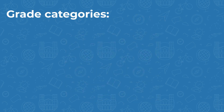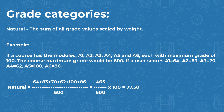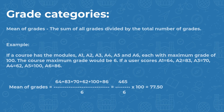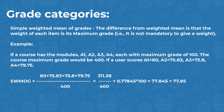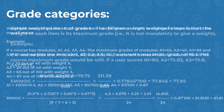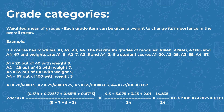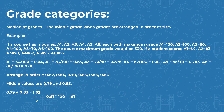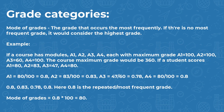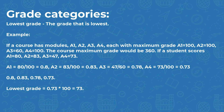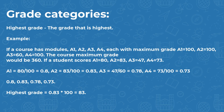Grade categories have nine different aggregation types: Natural (the sum of all grade values scaled by weight), Mean of Grades (the sum of all grades divided by the total number of grades), Simple Weighted Mean of Grades (the weight of each item is its maximum grade), Weighted Mean of Grades (each grade item can be given a weight to change its importance in the overall mean), Median of Grades (the middle grade when arranged in order), Mode of Grades (the most frequently occurring grade, or the highest if no most frequent), Lowest Grade, Highest Grade, and Mean of Grades with Extra Credits.